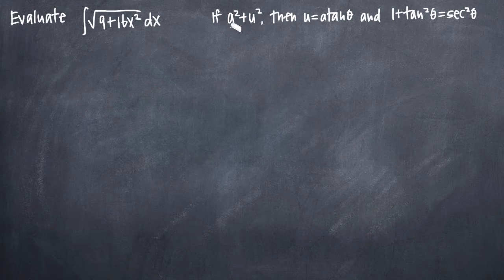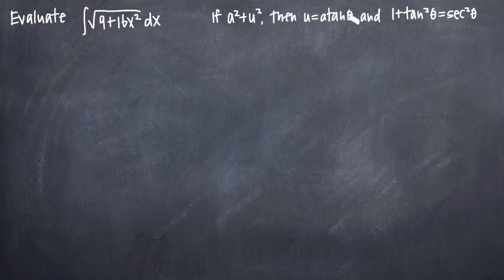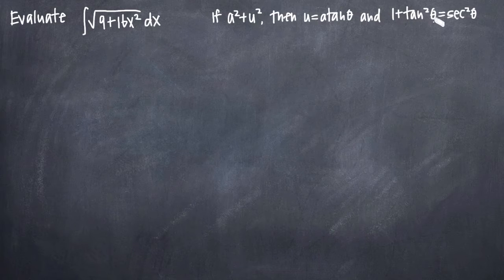We notice that we have the format a squared plus u squared. If we had u squared minus a squared, or a squared minus u squared, we would need to use a different substitution and a different identity. But when you identify a squared plus u squared in your function, we'll be using the substitution u equals a times tangent of theta, and the trigonometric identity 1 plus tangent squared theta equals secant squared theta.